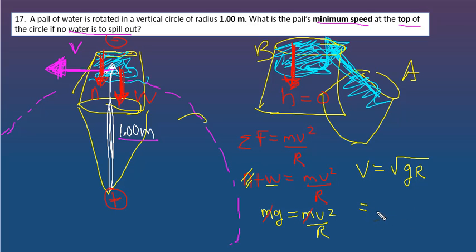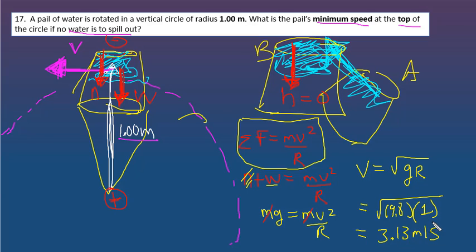You will see that formula over and over again. Please don't just throw that formula down. You want to explain where it comes from. And the radius is one. If you take the square root of 9.8, you apparently get 3.13 meters per second.